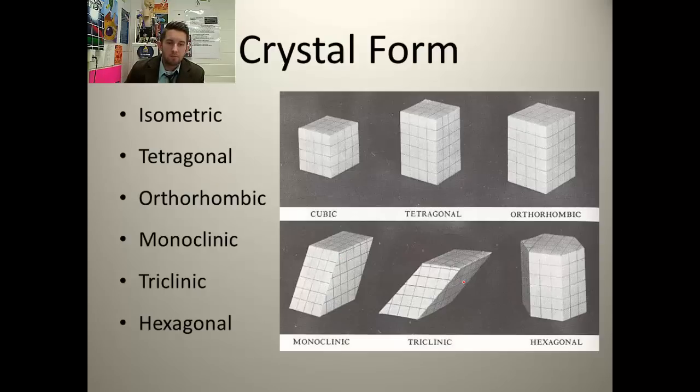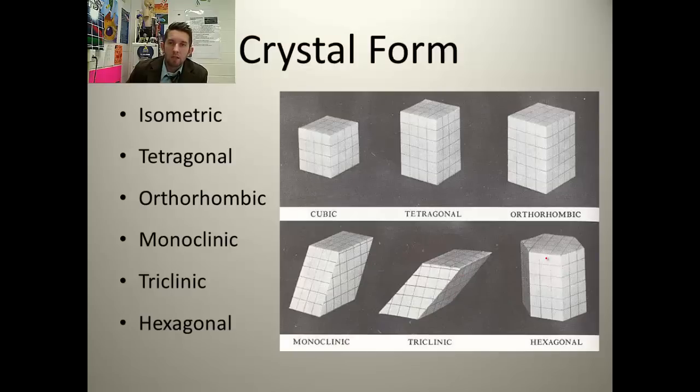Triclinic. We have three axes. All unequal. So you can see this is more askew than the monoclinic. And none of them are perpendicular to any of the others.